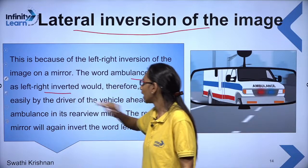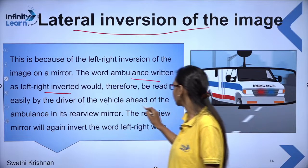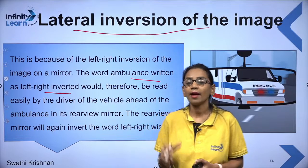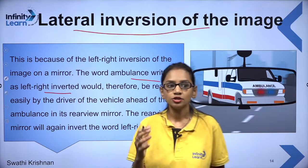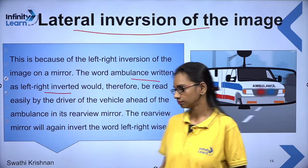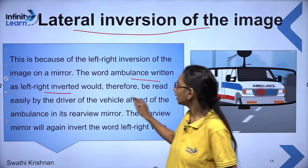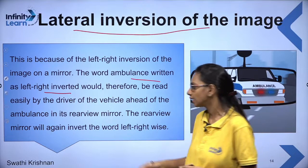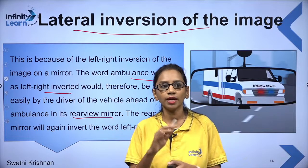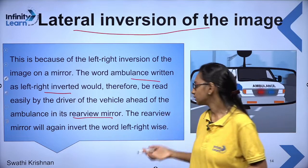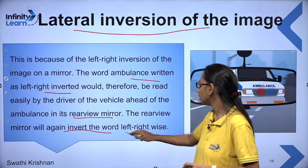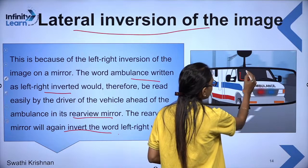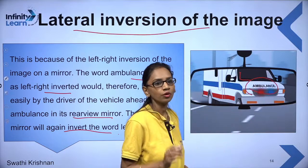The word AMBULANCE is written in a left-right inverted way so that the driver of the vehicle ahead can read it easily in their rear-view mirror. Because of lateral inversion, ambulance — which needs to travel fast carrying a patient — has its name written in reverse on the vehicle. When you see it through the rear-view mirror, the mirror inverts it left-right again and you can read 'AMBULANCE' correctly. Lateral inversion means the image formed by the mirror is always left-right inverted. The right side of the object appears as the left side of the image, and the left side appears as the right side.